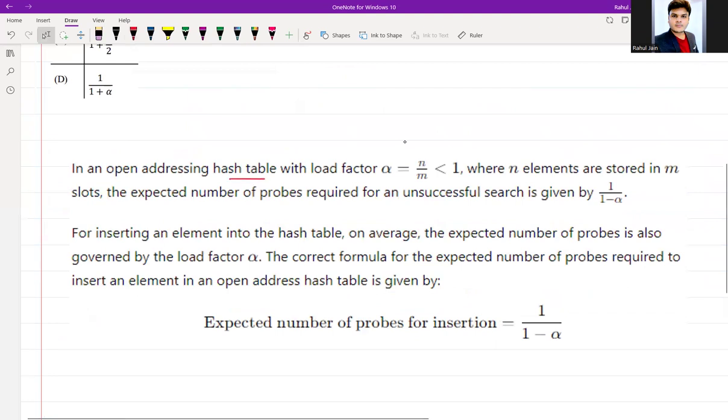In an open addressing hash table with load factor α = n/m less than 1, where n elements are stored in m slots, the expected number of probes required for an unsuccessful search is given by 1/(1-α). For inserting an element into the hash table on average, the expected number of probes is also governed by the load factor.